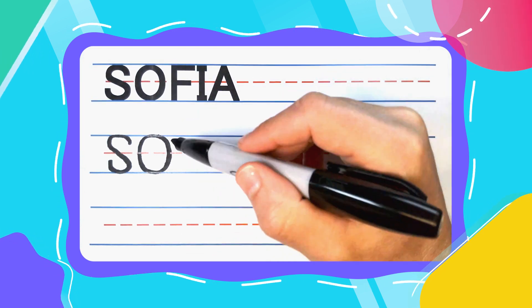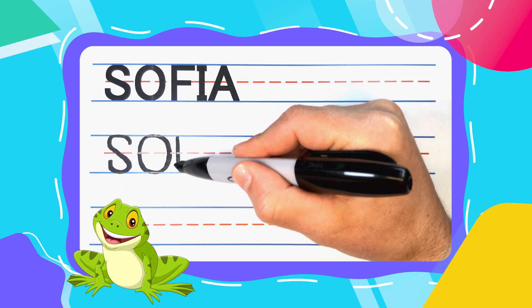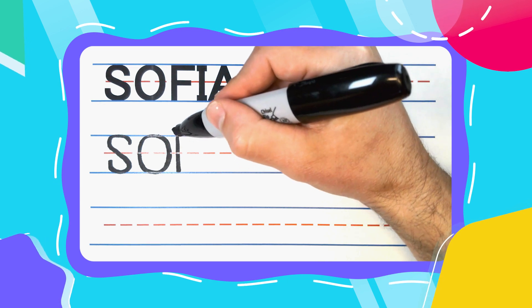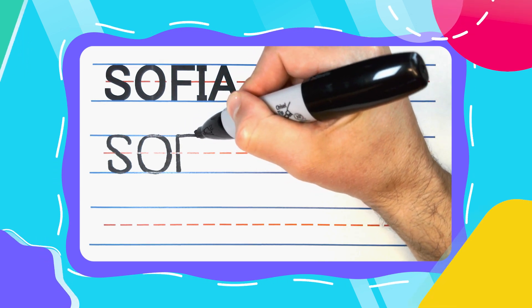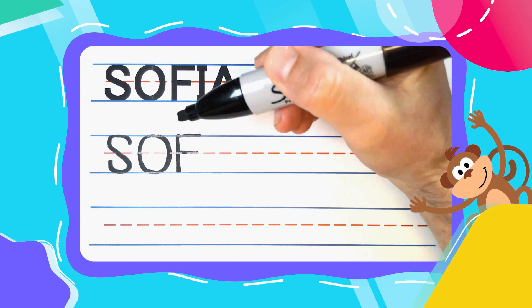The next letter in Sophia is the friendly froggy F. The froggy F starts with a straight line down. Come back to the top. Do a big line from the left to the right. Then come to the middle. Do another one but smaller.